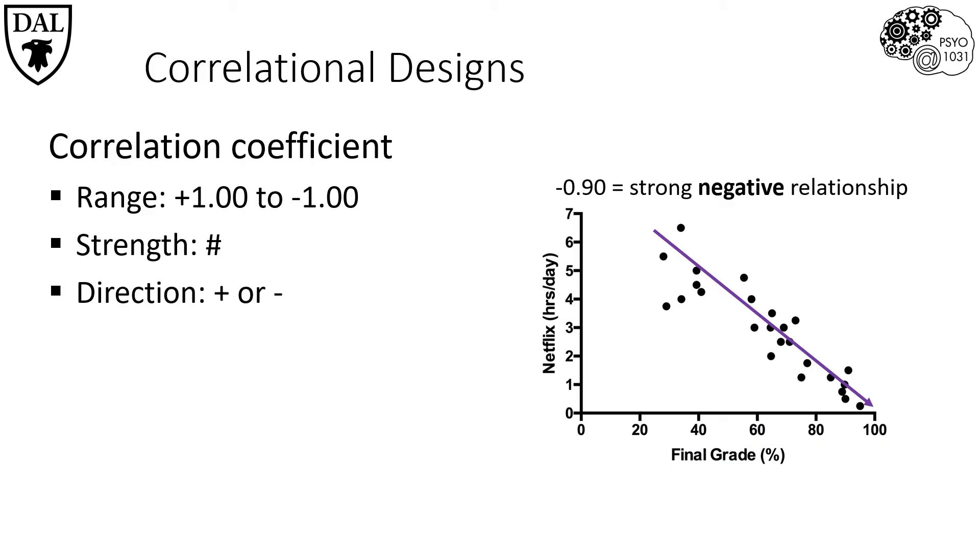As demonstrated, correlational designs can tell us a lot about the relationships between two variables and so are very useful and frequently used in psychology. Let's focus in now on another example to help us see why psychologists might choose to address their research questions with the correlational design.